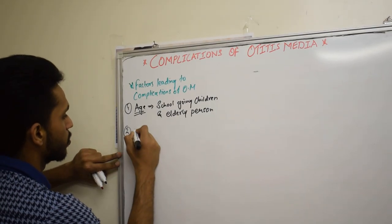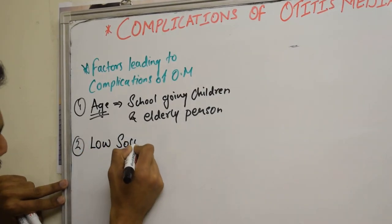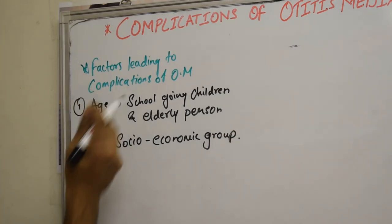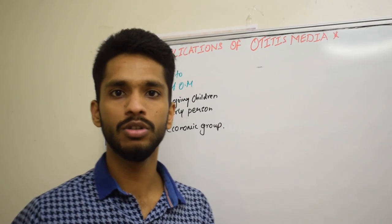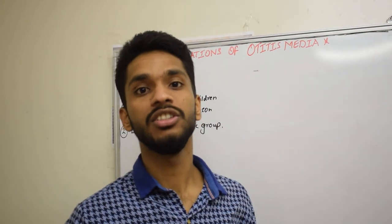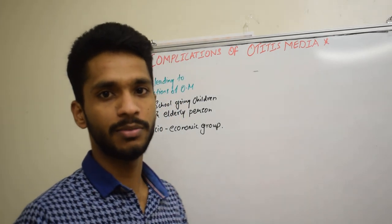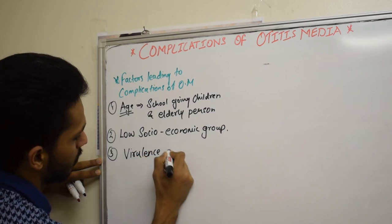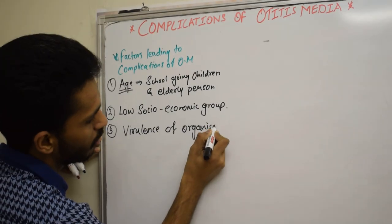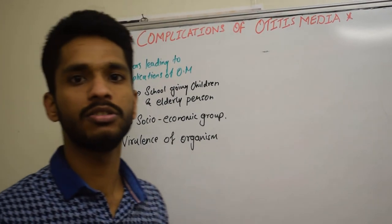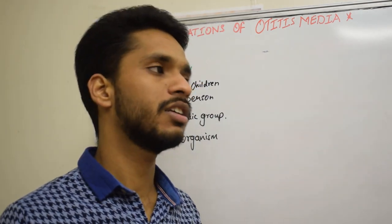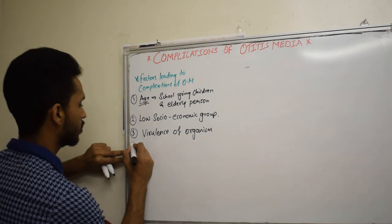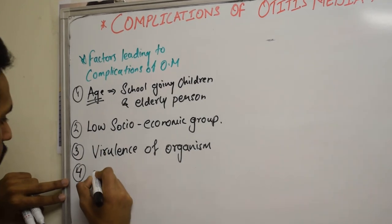The second factor is the low socio-economic group. People in this group are less aware about ear hygiene and tend to be more susceptible to complications. The third factor is the virulence of organisms — many organisms are becoming resistant to antibiotics, so even after giving antibiotics they are not treated well, leading to complications of otitis media.